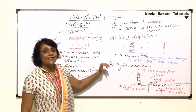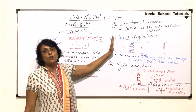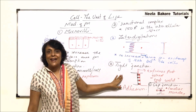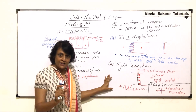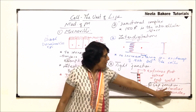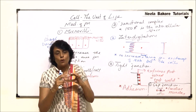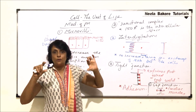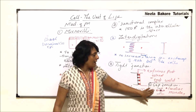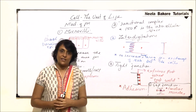So these are certain junctional complexes: interdigitations for increasing exchange between cells; tight junctions for adhesion so that cells remain stuck to each other; and gap junctions, found especially in cardiac muscles, where a protein channel allows substances to move between cells. A few more junctional complexes will be taken up in the next video.